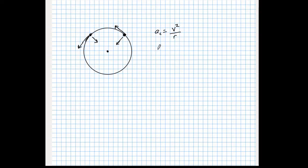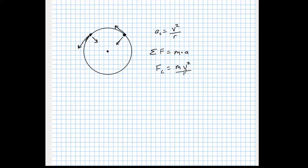Combining that with Newton's second law — which says that the sum of all forces on an object equals mass times acceleration — and noting that the only acceleration acting is the centripetal acceleration, the force that keeps an object on a circle equals the mass times the velocity squared divided by the radius. So the bigger your mass or velocity, the more force you need; the bigger the radius, the less force you need.